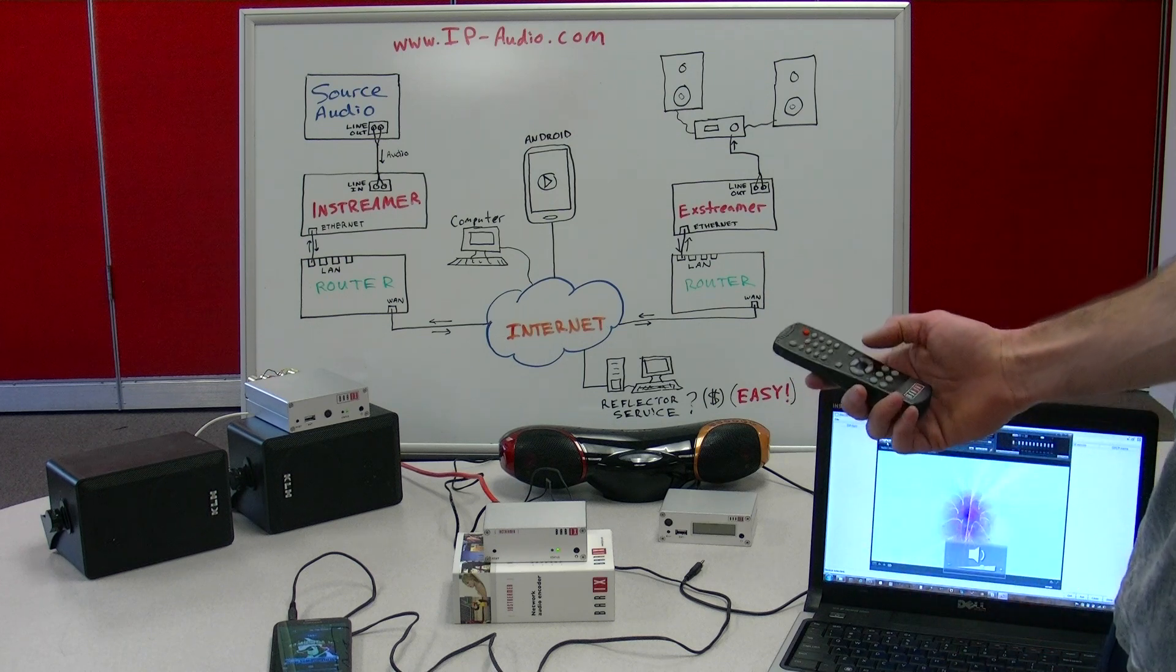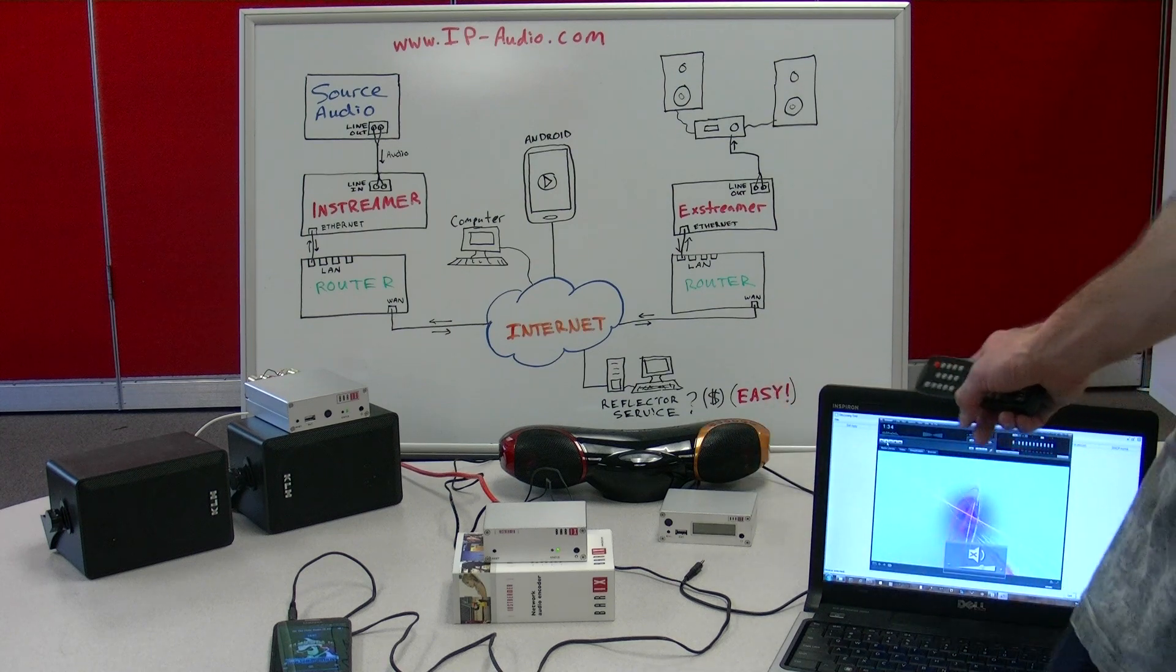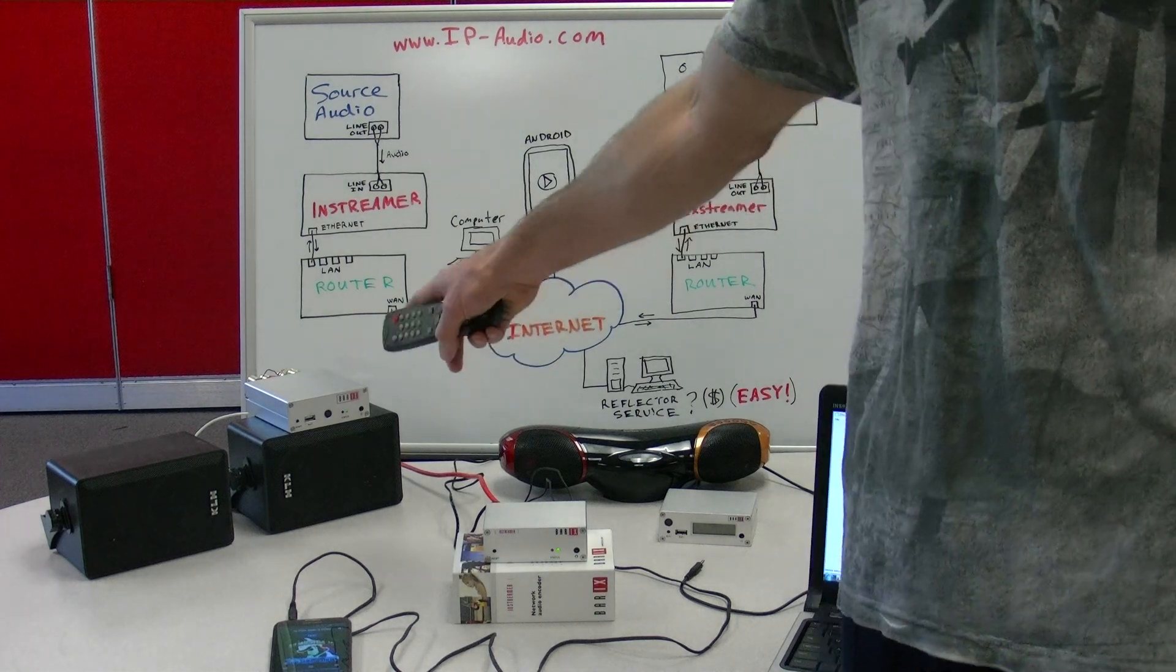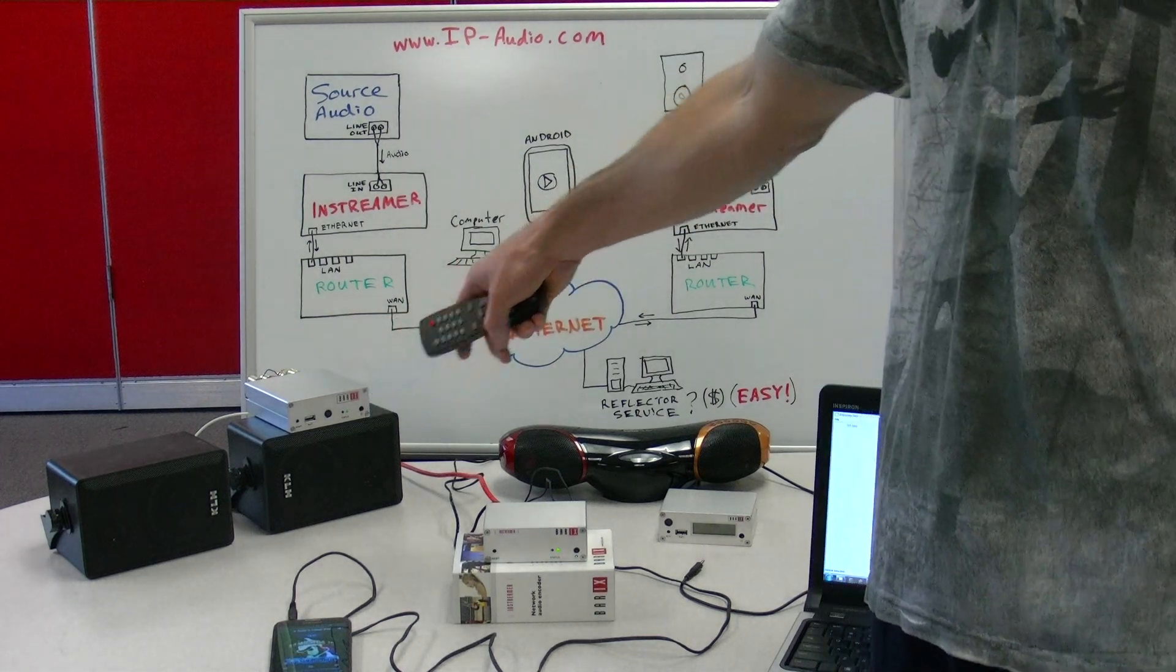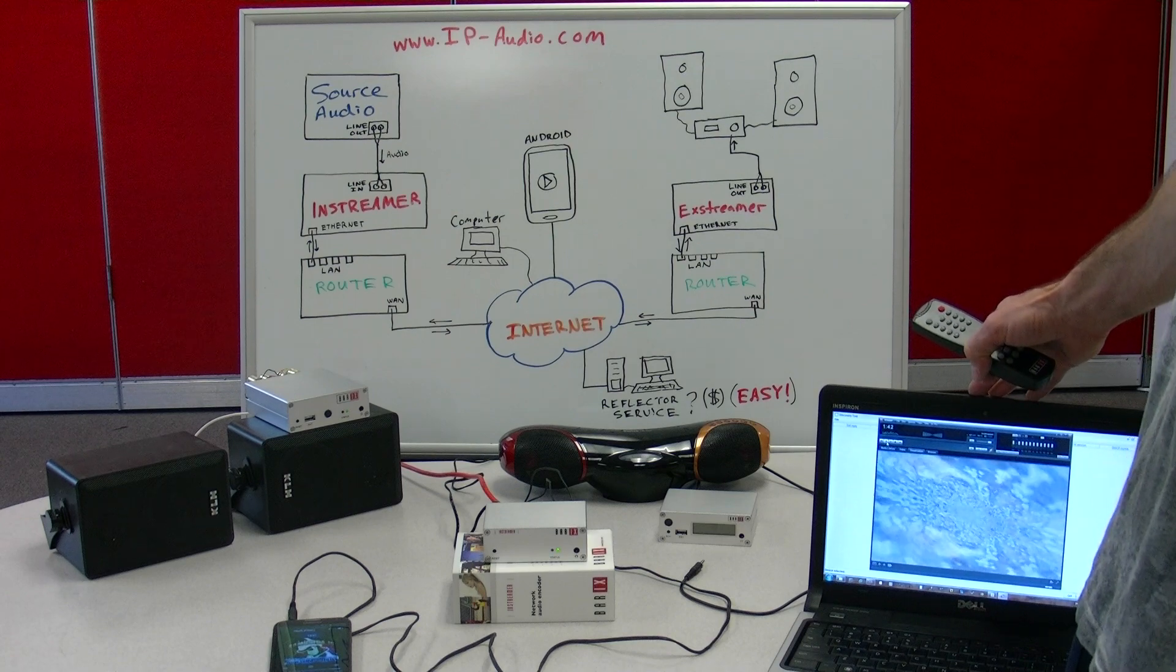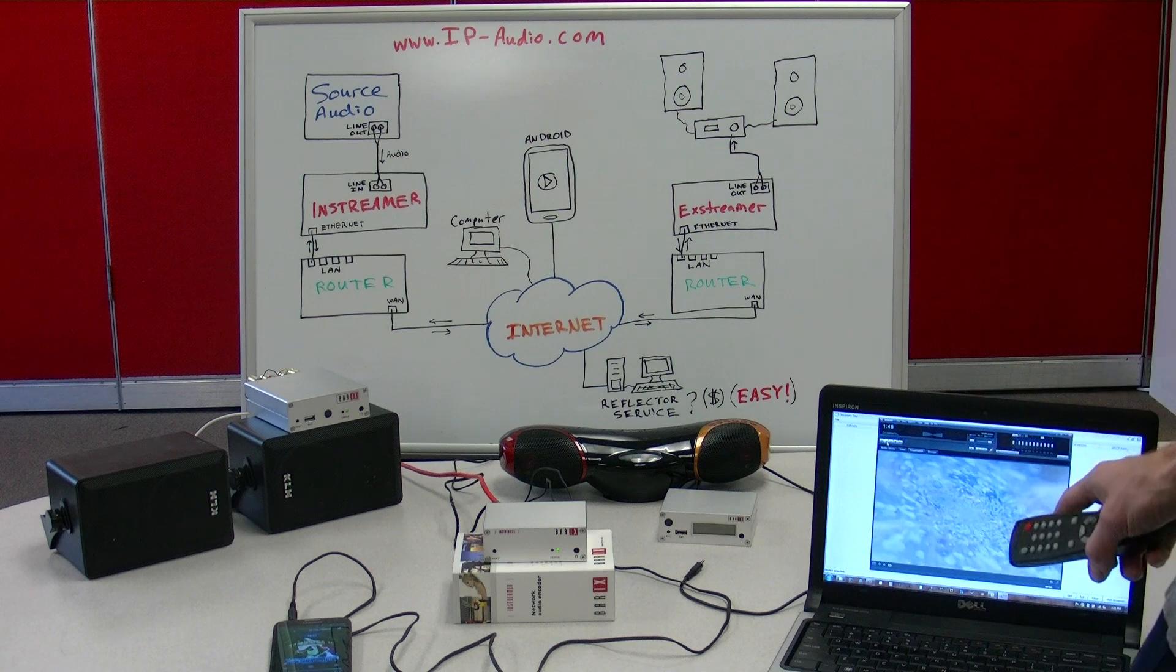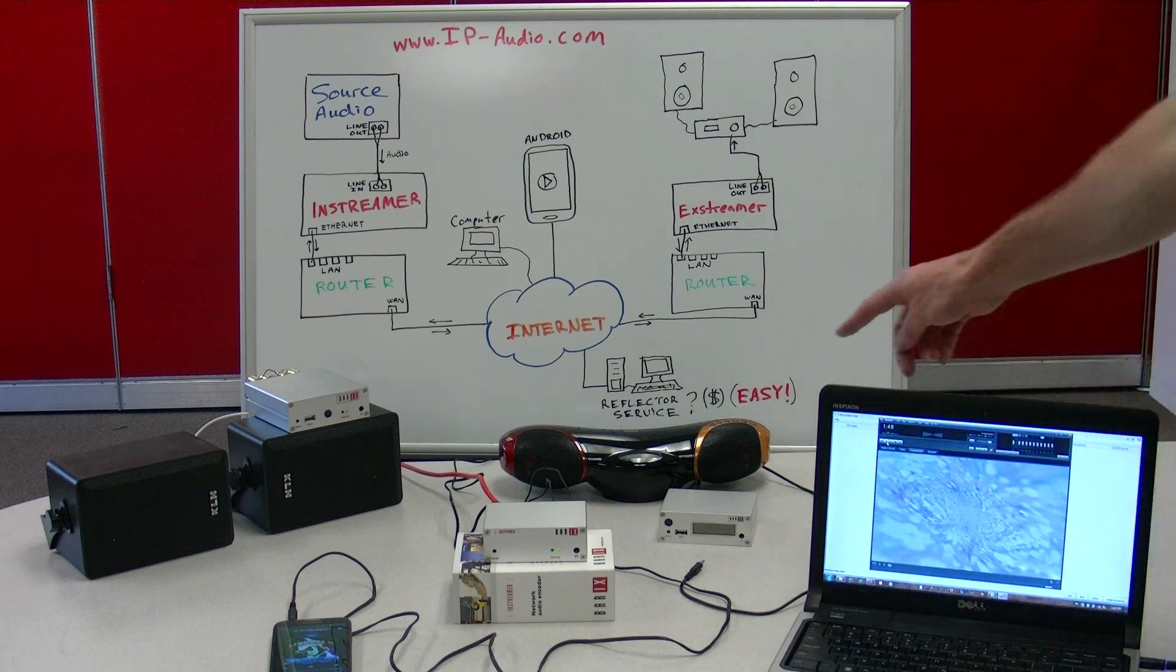You can hear there's a little bit of an echo. The reason for that is that the buffering on the software player is set higher than what our hardware decoder is. So these can stream with very low latency. Typically Winamp and Windows Media Player and RealPlayer are going to have quite a bit higher buffering and so that's why the audio was delayed a little bit here.